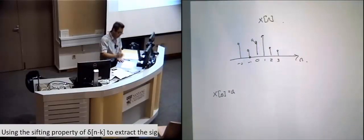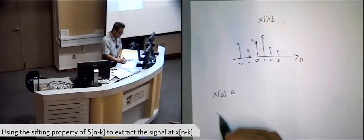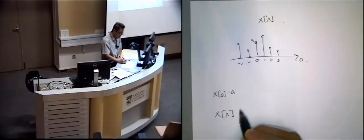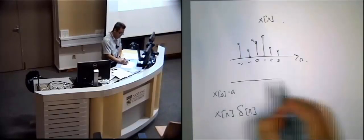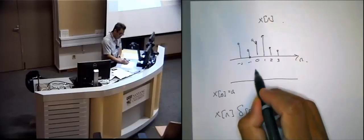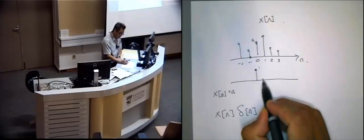The other way I could do it, a little bit more cleverly, is I can say x(n) multiplied by delta(n). What is delta(n)? So delta(n) is 1 with a lot of zeros, right?